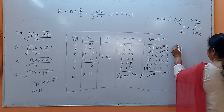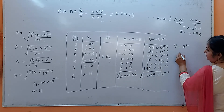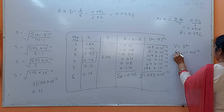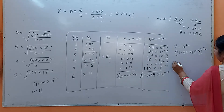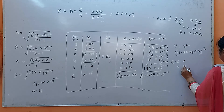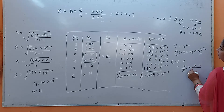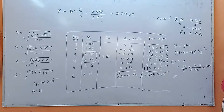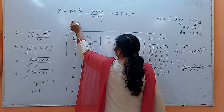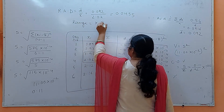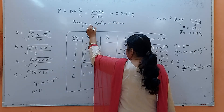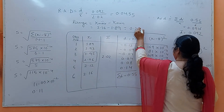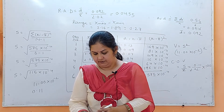Variance V = s² = (0.11)². For coefficient of variance: s divided by x-bar, that is 0.11 divided by 2.02, multiplied by 100 to get the percentage. For range: x-max minus x-minimum = 2.16 minus 1.89, which comes out to be 0.27. That was the first numerical.